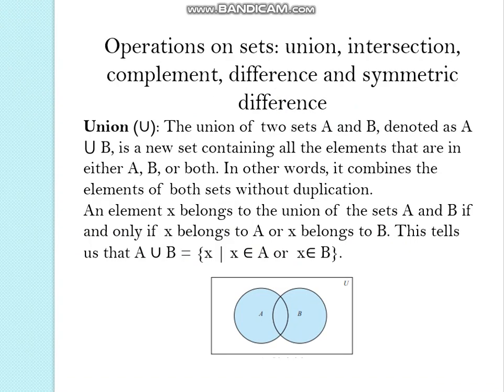What is meant by a union? The union of two sets A and B denoted as A union B is a new set containing all the elements that are in either A or B or both. In other words, it combines the elements of both sets without duplication. An element X belongs to the union of the set A and B if and only if X belongs to A or X belongs to B.